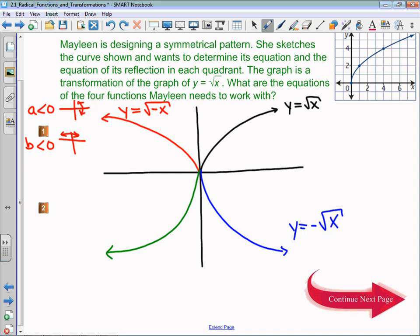To get that equation in quadrant 3, what I could do is take the red equation and apply an a parameter of negative 1, and that would give me y equals negative the square root of negative x.